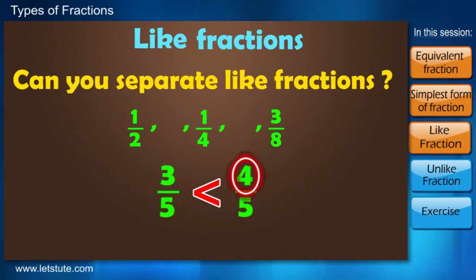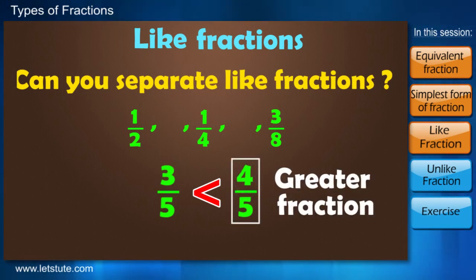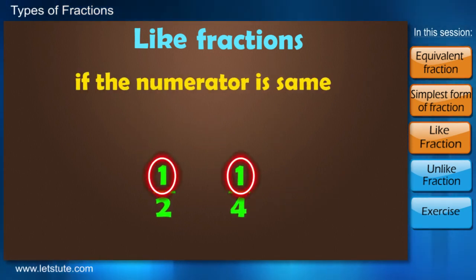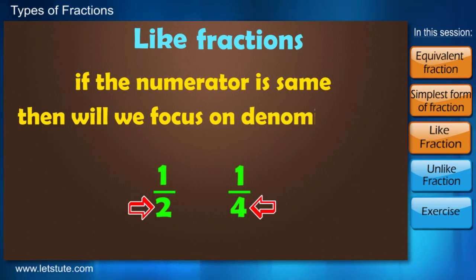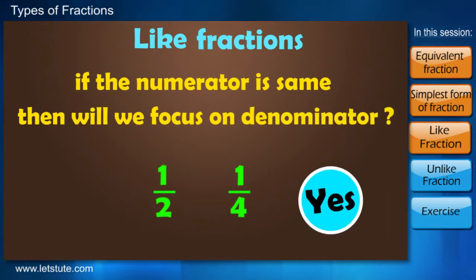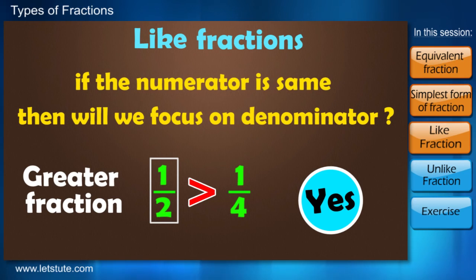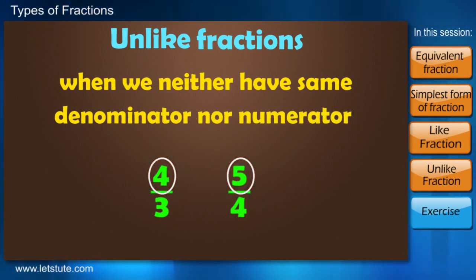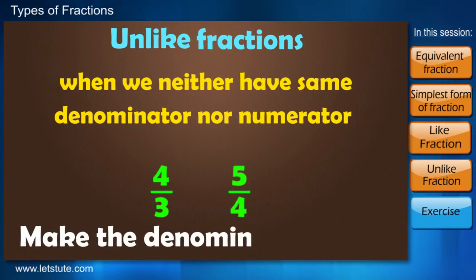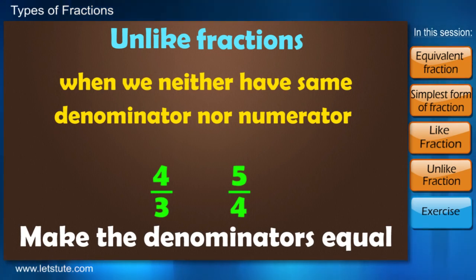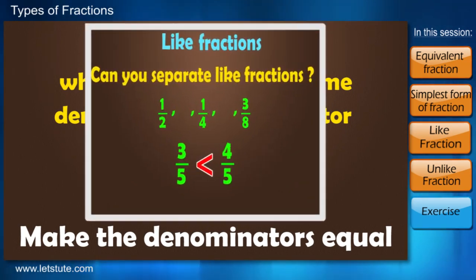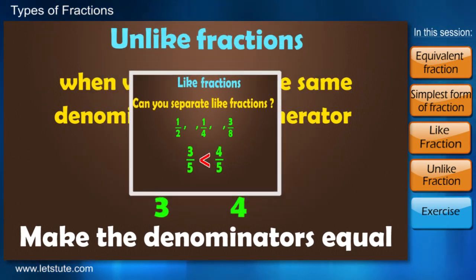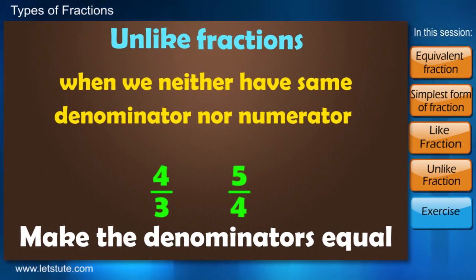When the denominator of fractions are the same, you just have to focus on the numerator. Whichever fraction has bigger numerator will be the bigger fraction. So if the numerator is same, then we'll focus on denominator. Yes, whichever fraction has smaller denominator will be the bigger fraction. But what happens when they neither have same denominator nor numerator? Situation is a little different then.